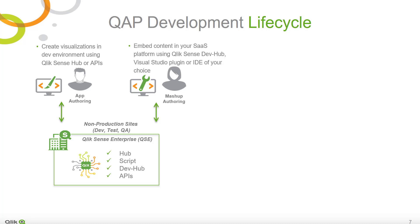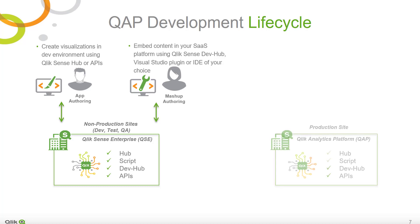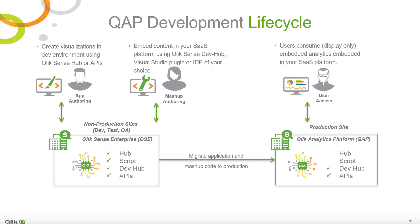If you decide to pursue the API approach, you can also choose to not create all charts up front, but instead create some charts on the fly in your production environment. In this way, you can build dynamically created apps and charts based on data and events from your SaaS platform.